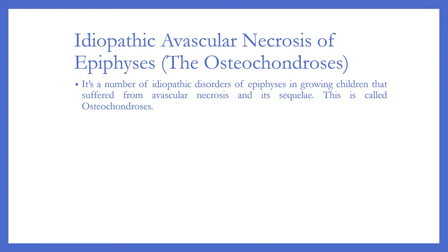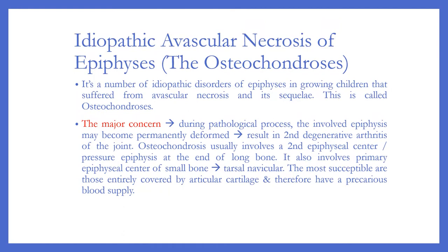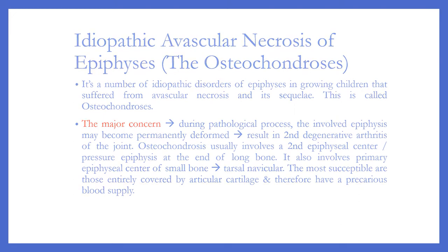This is called osteochondrosis. The major concern is that during the pathological process, the involved epiphysis may become permanently deformed, resulting in secondary degenerative arthritis of the joint. Osteochondrosis usually involves a secondary epiphysial center or pressure epiphysis at the end of a long bone, and also involves the primary epiphysial center of small bones such as tarsal bones. The most susceptible are those entirely covered by articular cartilage, which therefore have a precarious blood supply.